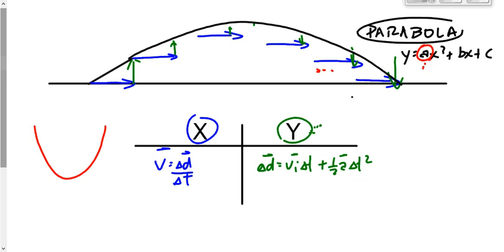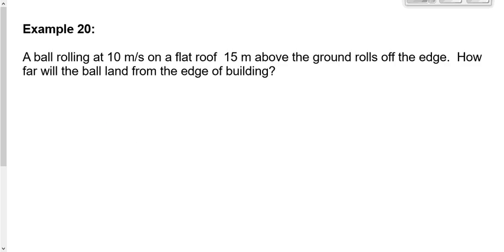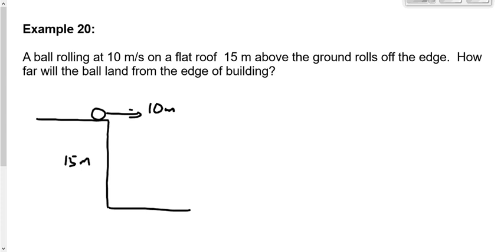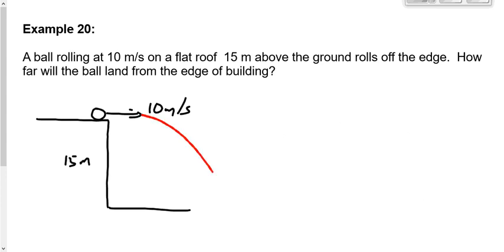Let's look at Example 20 — the second to last one in your unit. A ball rolling at 10 m/s on a flat roof 15 meters above the ground rolls off the edge. Let's draw this out: there's a roof 15 meters above the ground, and a ball rolling at 10 m/s. It's going to go like this — just off the edge. Is that still a parabola? Yes, it's just half a parabola. We describe half a parabola mathematically the same way as a full parabola.